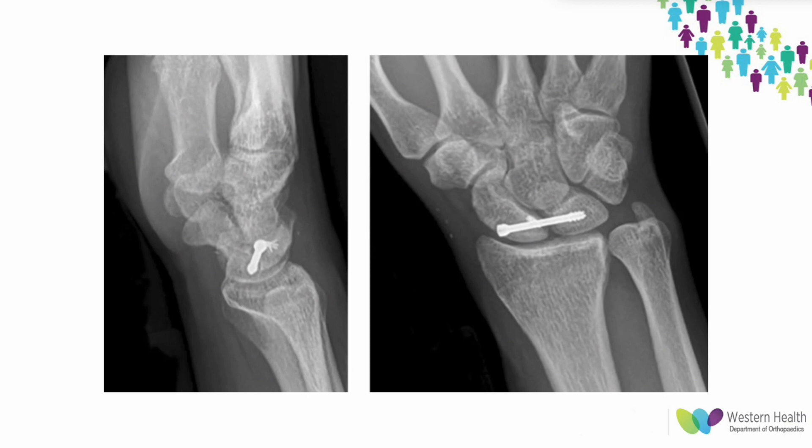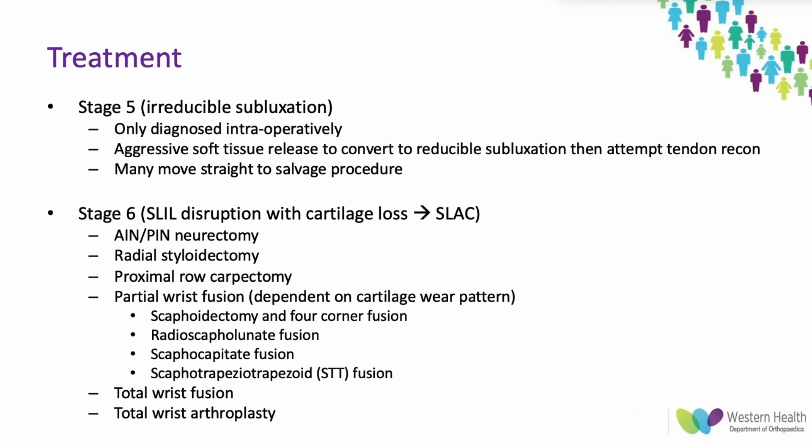For Stages 5 and 6, treatment moves towards salvage procedures. Stage 5 with irreducible subluxation requires aggressive soft tissue release to convert it to reducible subluxation before tendon reconstruction, though many surgeons proceed directly to salvage. Stage 6 salvage options range from minor procedures such as denervations and radial styloidectomies, all the way to total wrist fusions and total wrist arthroplasty.